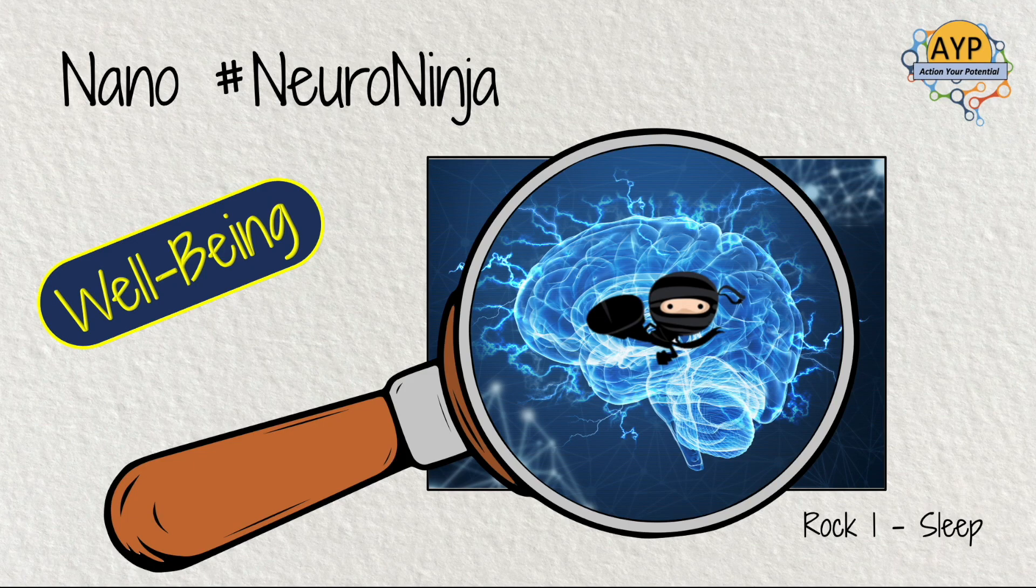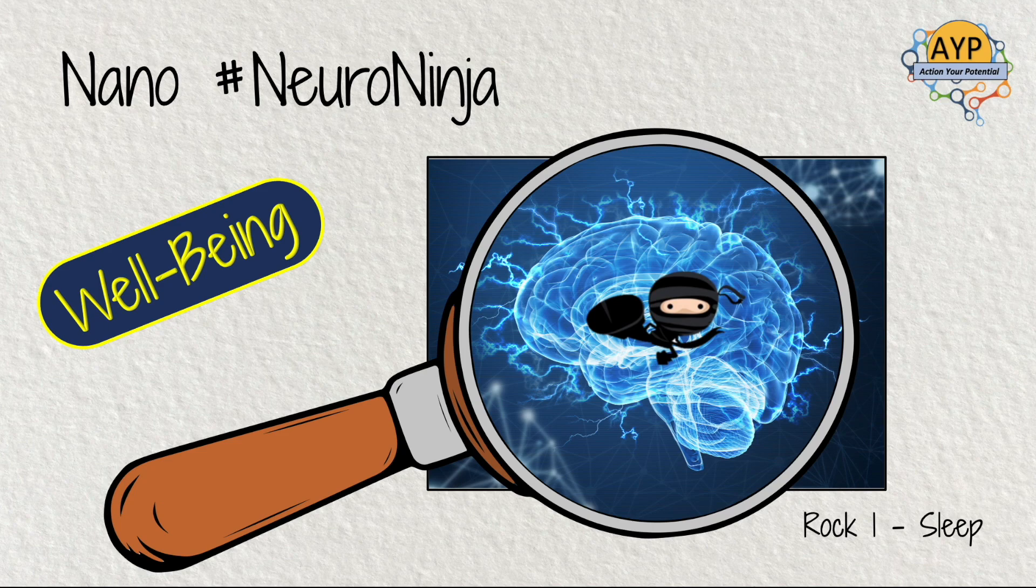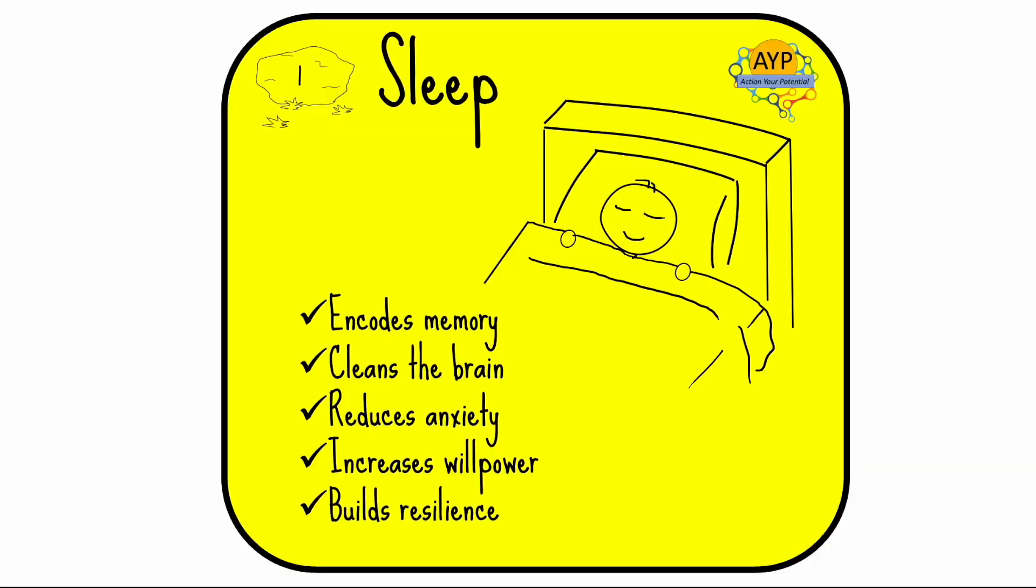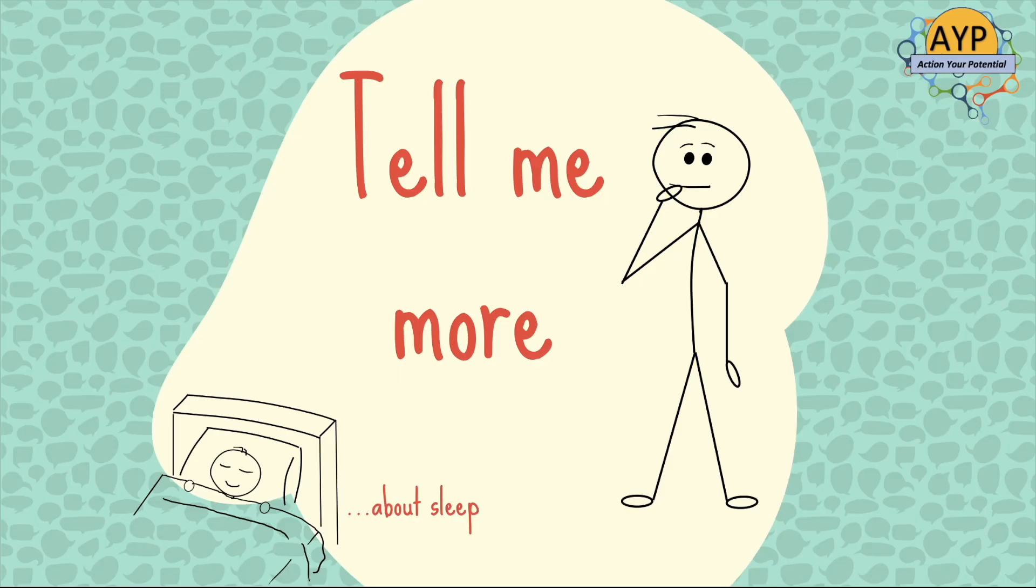Thanks for clicking on the link. Nano Neuro Ninja - knowledge in a minute or two. Rock One: Sleep. Really important for encoding memory, cleaning our brain, reducing anxiety, increasing willpower, and building resilience. Well-being rocks are all about building the best version of ourselves every day.